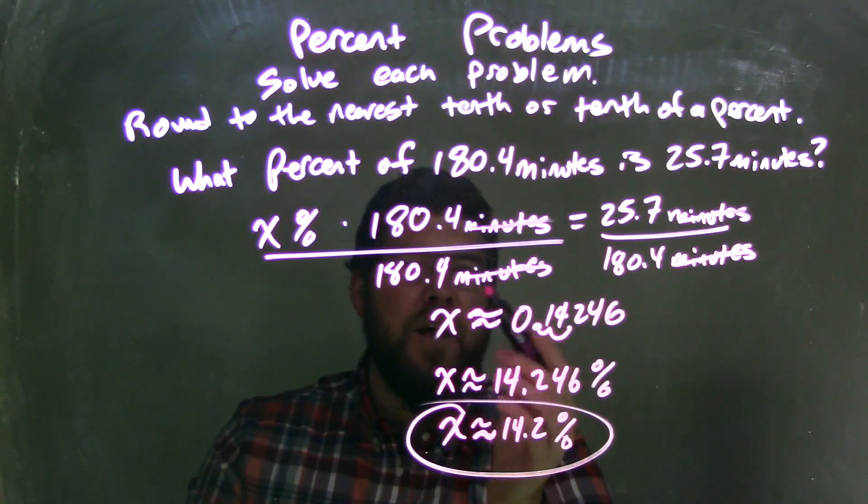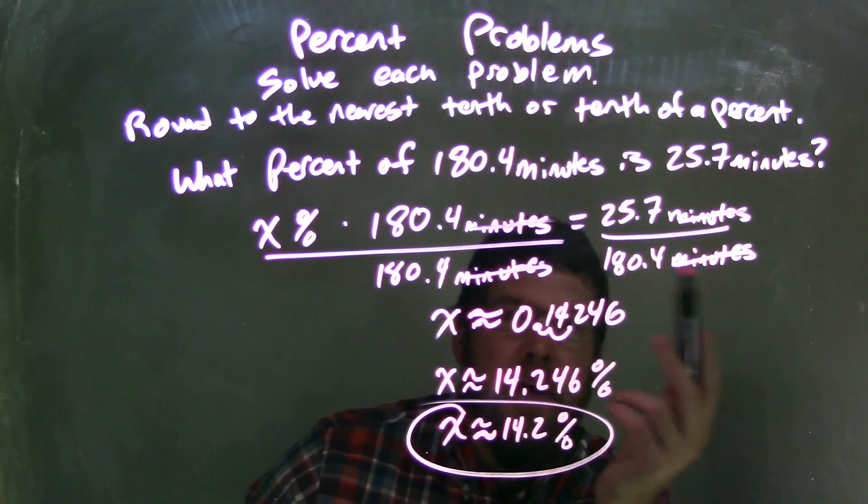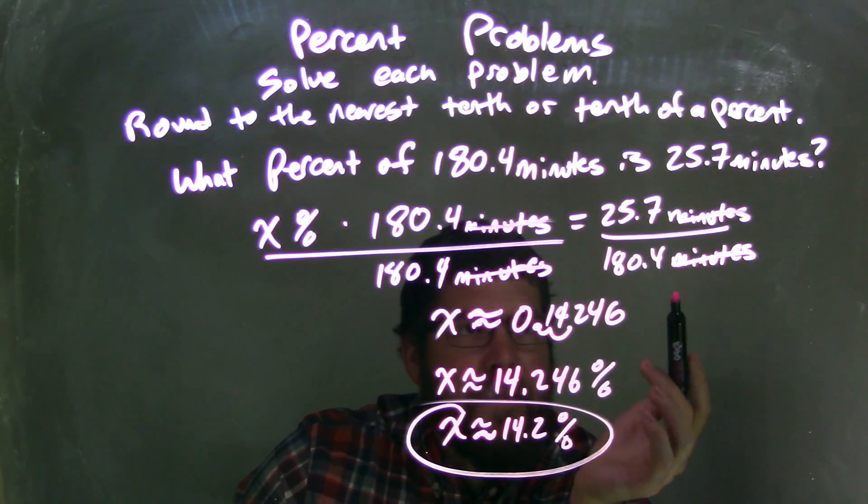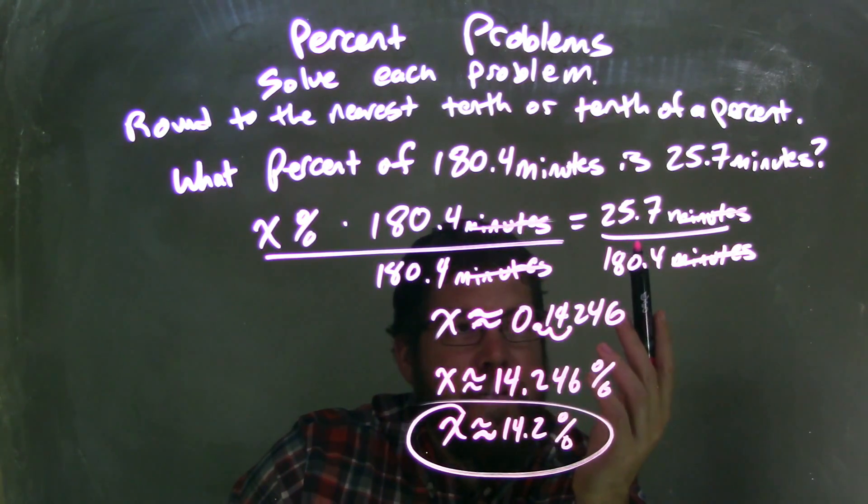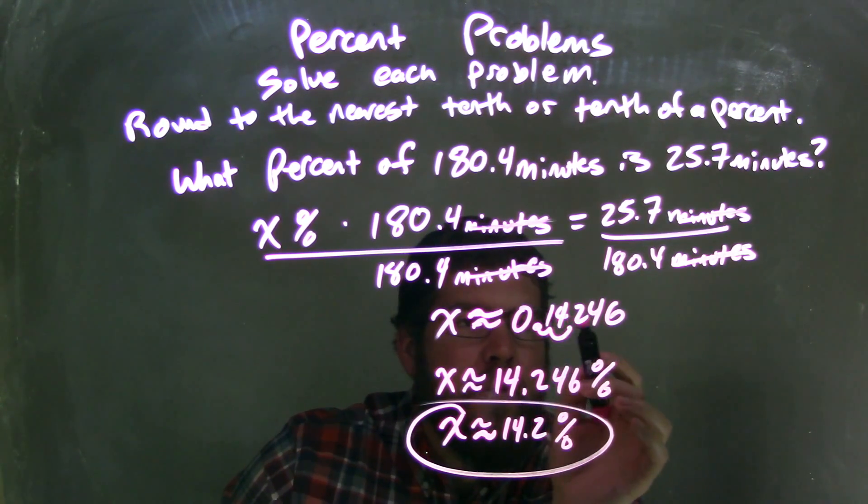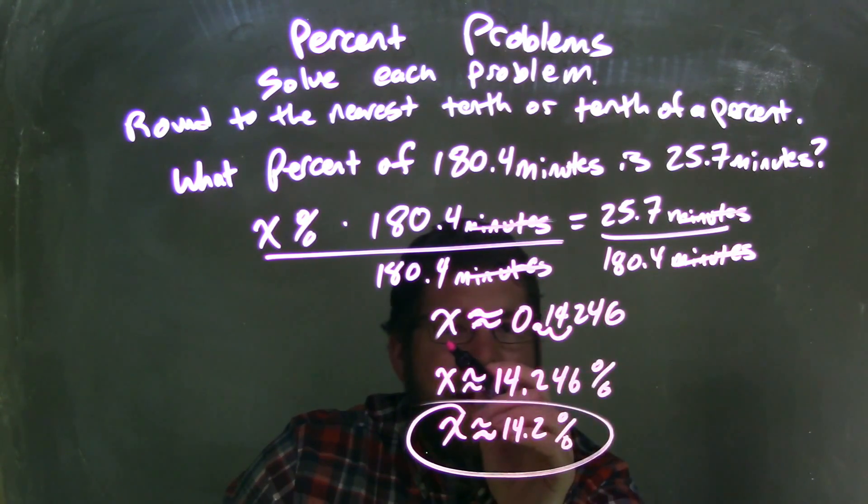I then divided both sides by 180.4 minutes. The minutes ended up canceling out, leaving me the decimal 25.7 divided by 180.4, which is 0.14246. That was equal to my x.